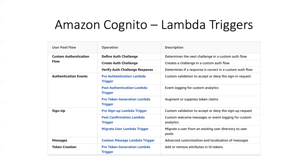Let's take a look at Lambda triggers. You can define your own customized authentication challenges — for example, after entering your username and password, the next flow could be to select certain traffic signal lights in a set of pictures. A pre-authentication Lambda trigger can be used for custom validation or to deny sign-in requests. A post-authentication Lambda trigger can log the login event for analytics. A pre-token generation Lambda trigger can suppress token claims.